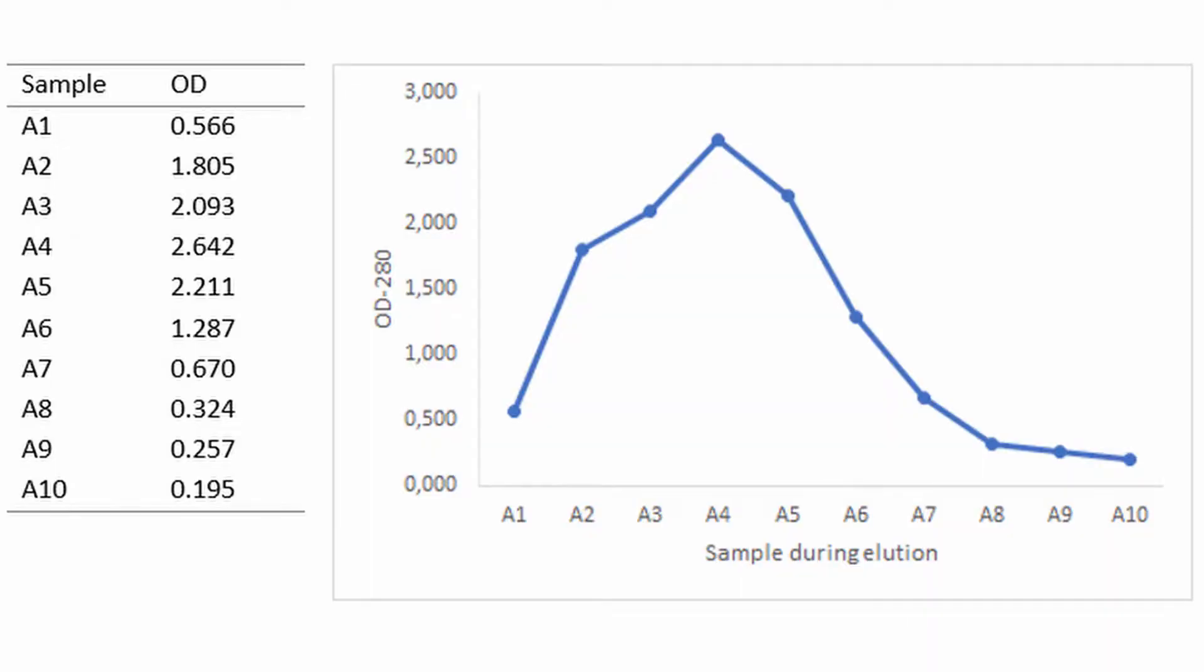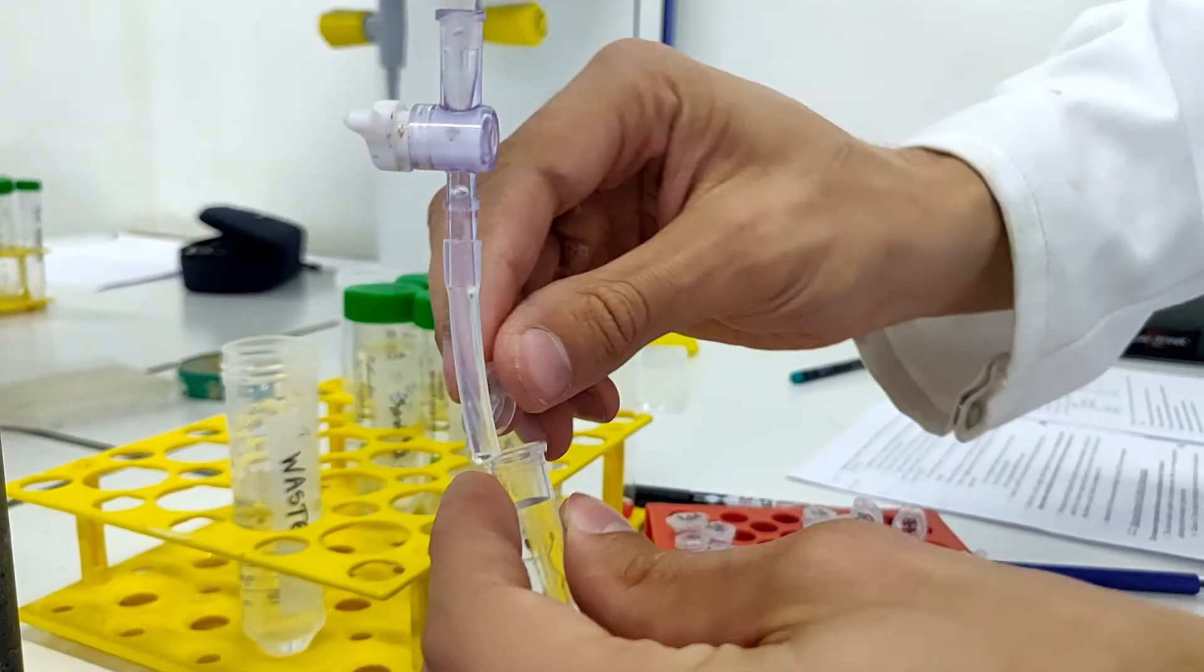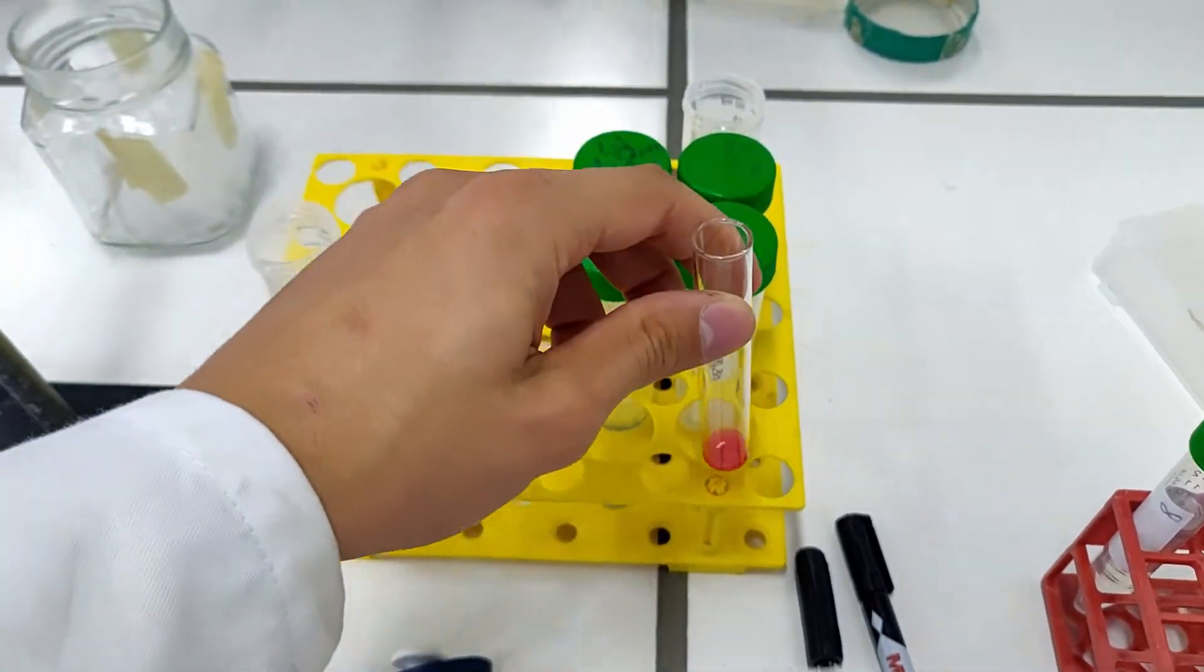This elution profile is obtained and expected. As you can see, during the collection of sample A4, the highest amount of lectins were eluted from the column. This sample should be more than 95% pure lectin, and to further test this,